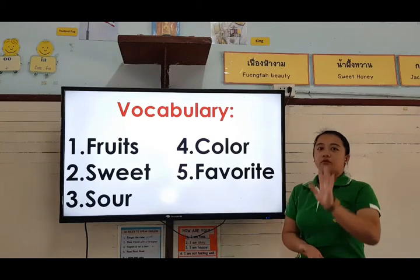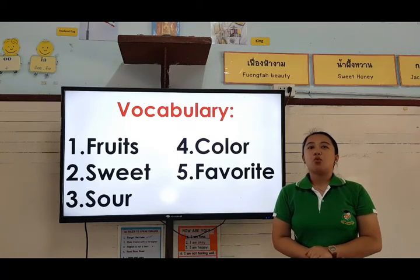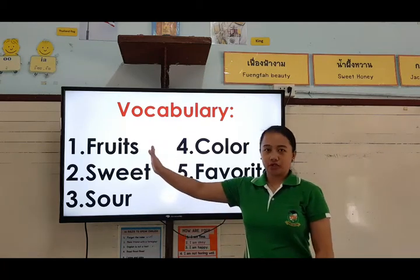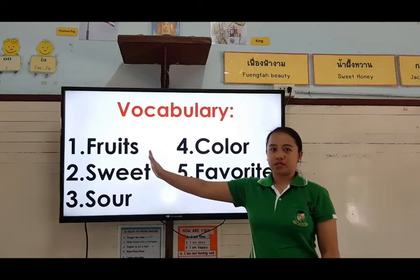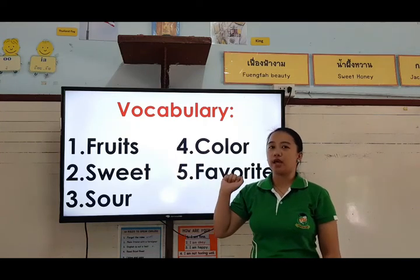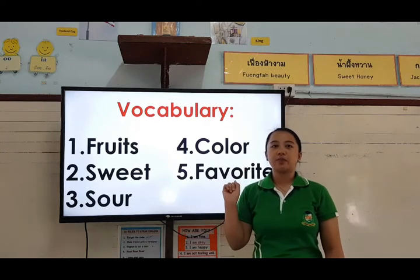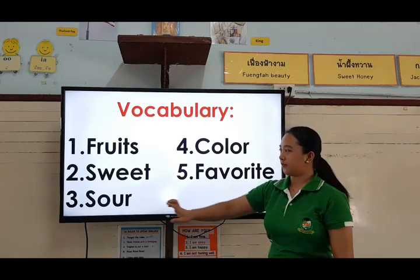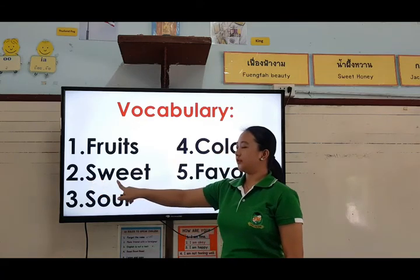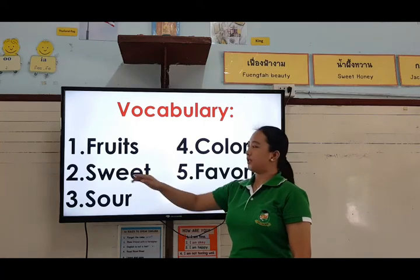So, I have here five vocabularies. Let's try to read them one by one. The first one, we have fruits. Fruits. Okay, we spelled already fruits. Let's go with sweet. Sweet. Let's spell the word sweet: S-W-E-E-T. Sweet.